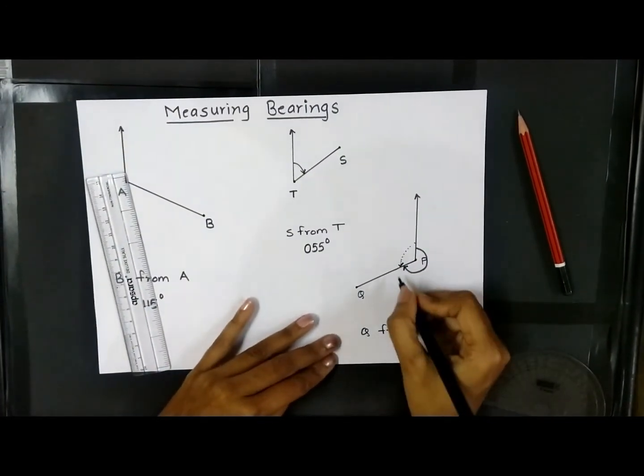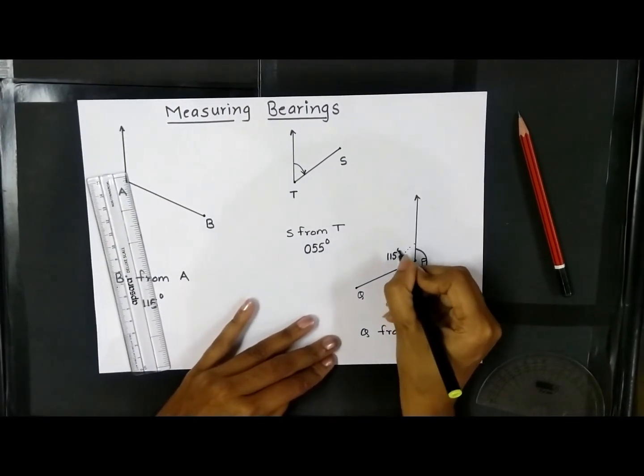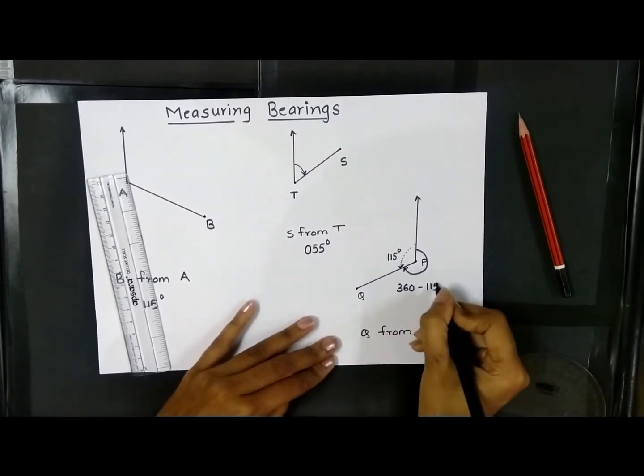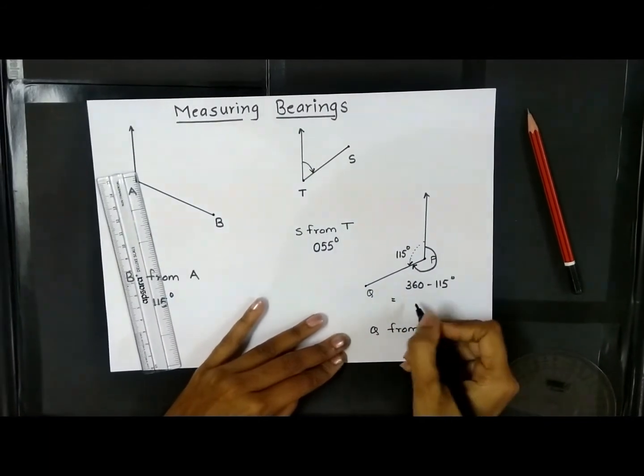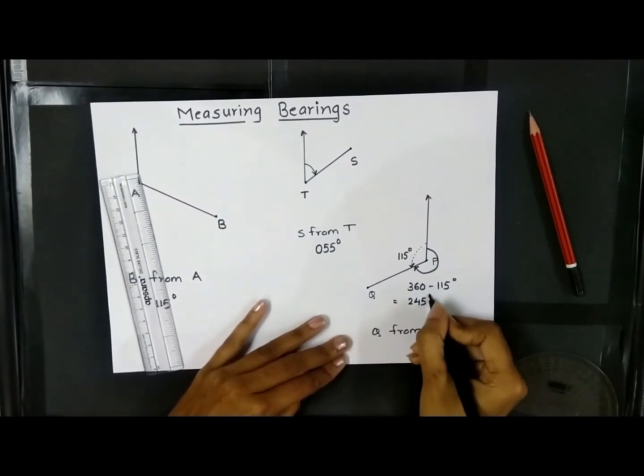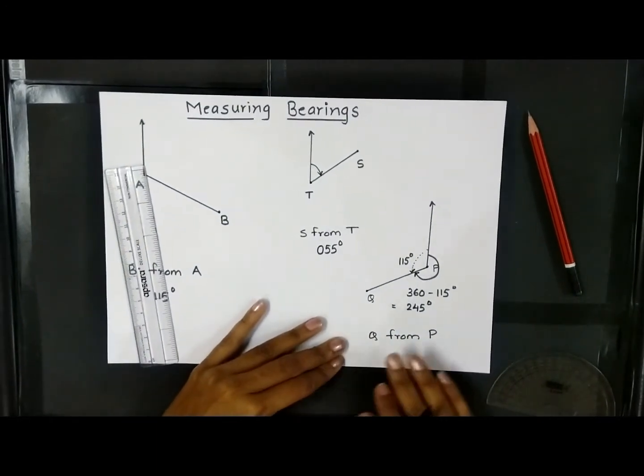And that is why my bearing of Q from P should be 360 minus 115 degrees, which is equal to 245 degrees. This is how I do measuring of bearings.